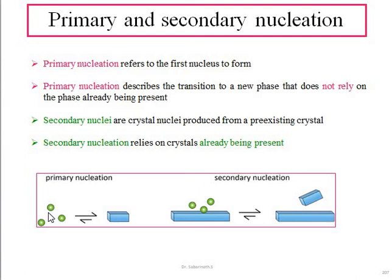Primary nucleation is a fresh one — it is the nucleus which is spontaneously formed. Secondary nucleation, by contrast, depends on a pre-existing crystal.